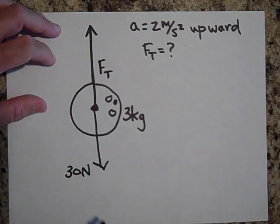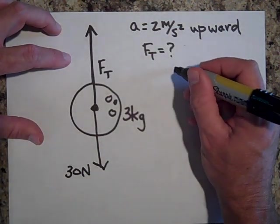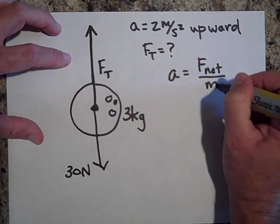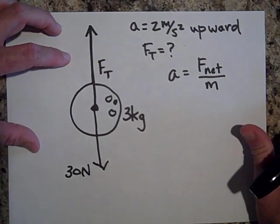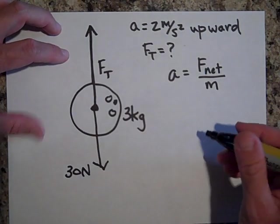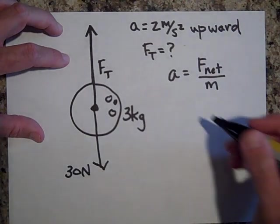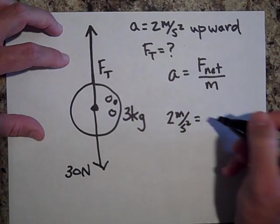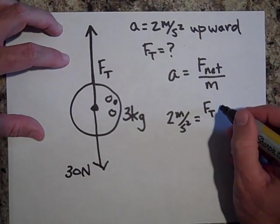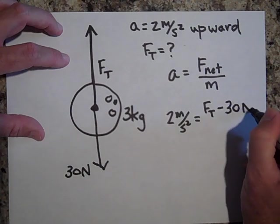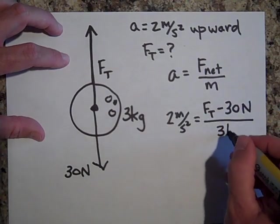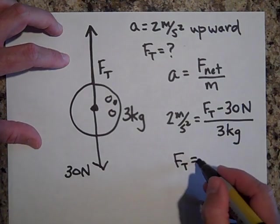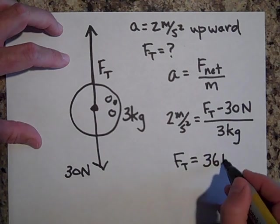So I'll make that bigger than this one, and so a equals F net over m. See if you always go this route then every problem is not different from each other, they're all kind of the same, and that's what I want you to see. So a, two meters per second squared, equals the net force, I'm going to put F_T, I know F_T is bigger, minus 30 newtons all over three kilograms. So I'm thinking F_T when I solve for this is 36 newtons.